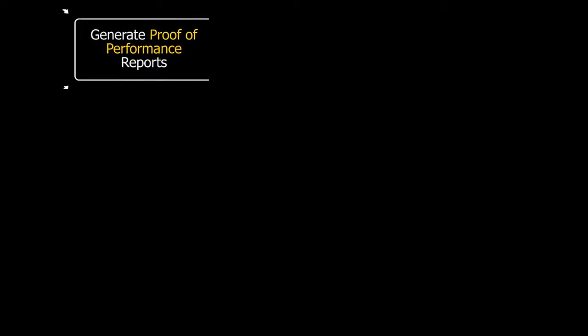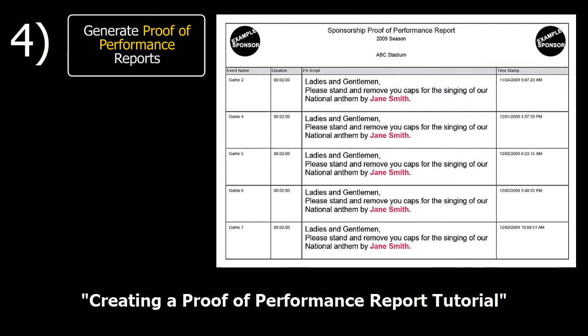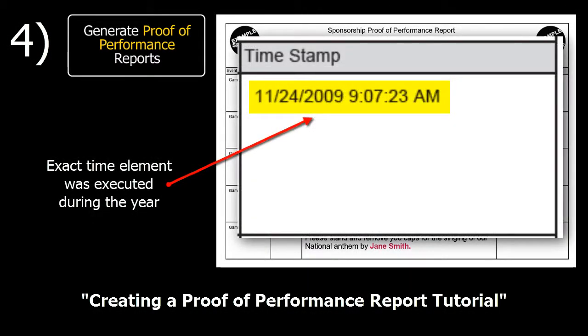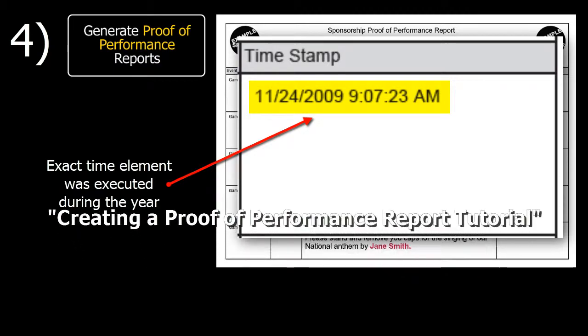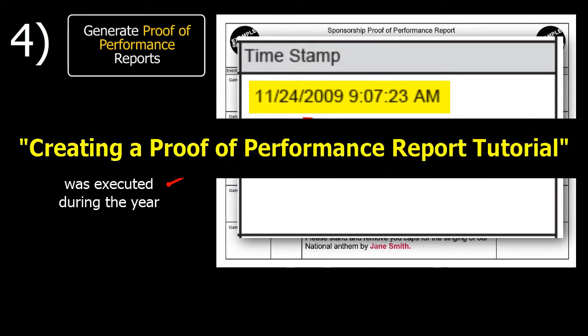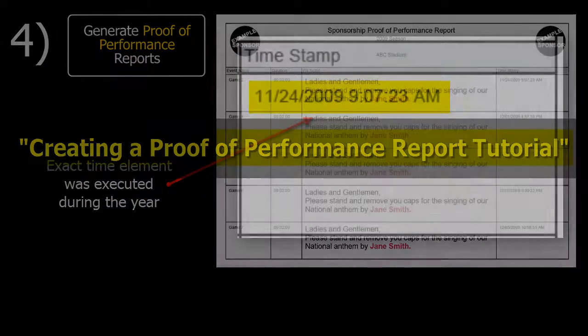The final step to ScriptPro is generating proof of performance reports for sponsors based on the elements executed throughout the season. This step is also great for running recap reports on your individual events. This step can be found in the creating a proof of performance report tutorial.